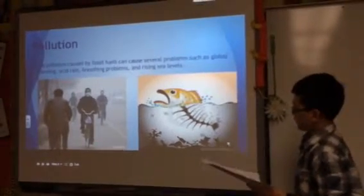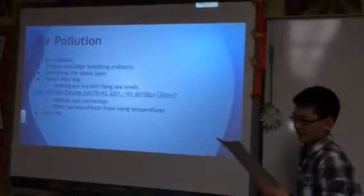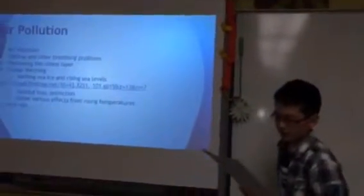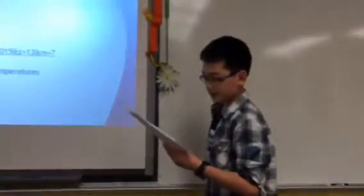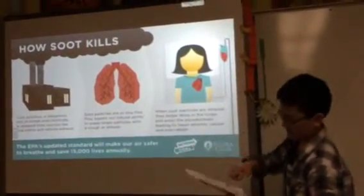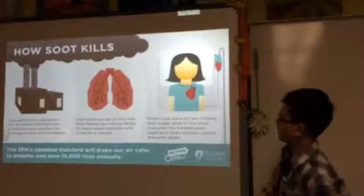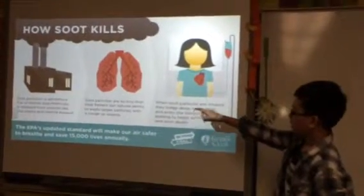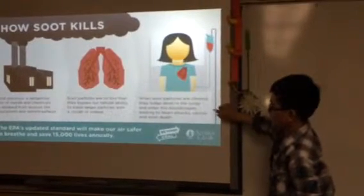Pollution is a big problem on Earth with numerous side effects. Air pollution causes tons of problems like acid rain, rising seas, global warming, and breathing problems like asthma and bronchitis. Acid rain is when pollutants get in the air and fall down again in the rain — this kills trees and wildlife. This picture shows how smog from factories and vehicles can kill. When people breathe it in, it ends up in our lungs and can enter the bloodstream, leading to heart attacks, cancer, and death.